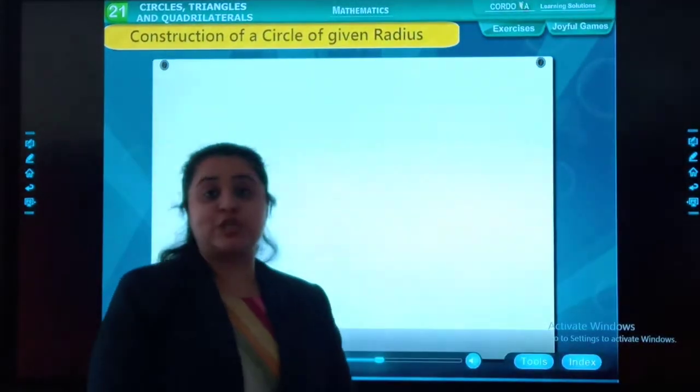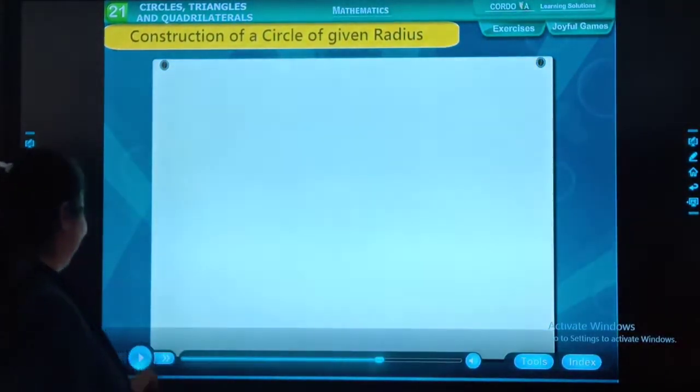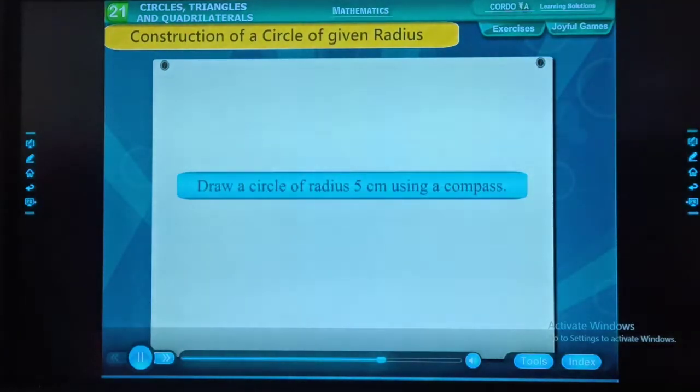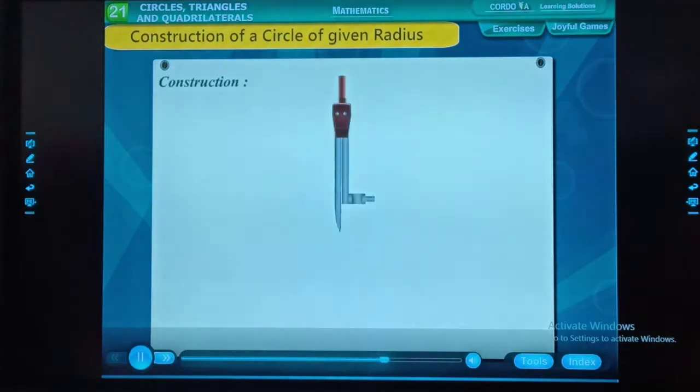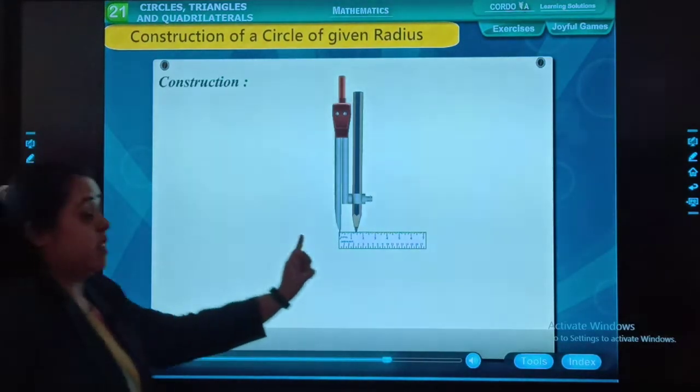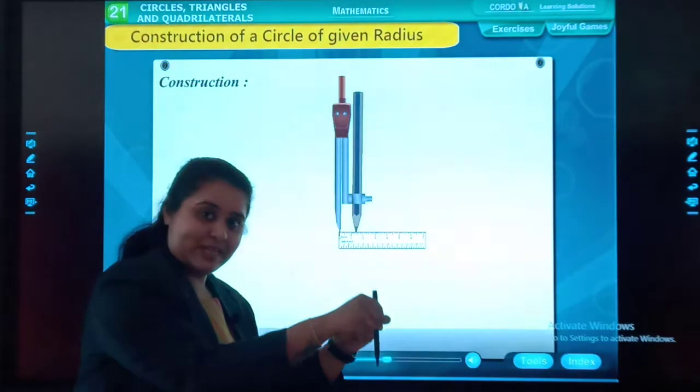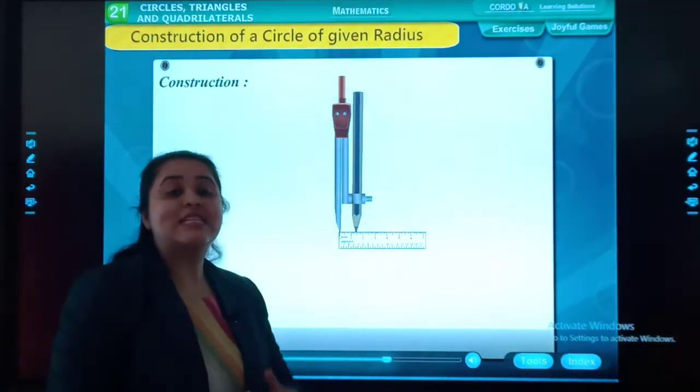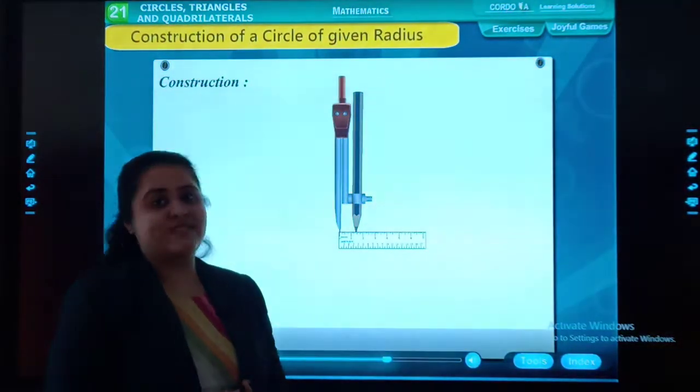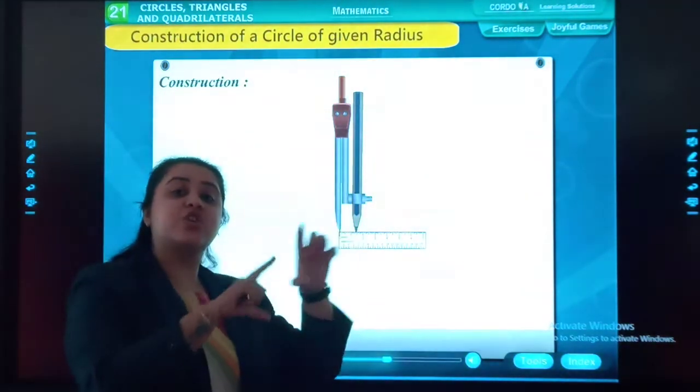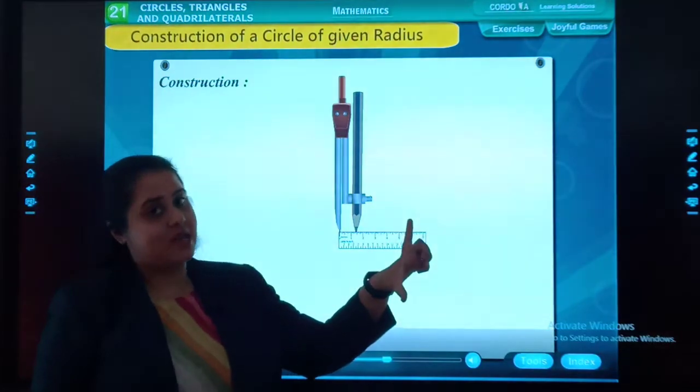Today's topic is construction of a circle, a circle of given measure. Draw a circle of radius 5 cm using a compass. Construction: Take a compass and fix the pencil in it. Measure and set the distance of 5 cm. Now, you have to take the rounder, then you have to place a pencil in it. You have to draw a circle of 5 cm. So now in the scale, you will measure the 5 cm.